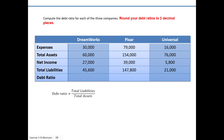Let's jump into calculating DreamWorks' debt ratio, rounded to two decimal places as indicated. Total liabilities is 45,600 divided by total assets which is 60,000. Rounded to two decimal places, our debt ratio is 0.76. We could also convert that to a percentage — it'd be 76%. So what does that mean? It means 76% of its assets are financed by debt.